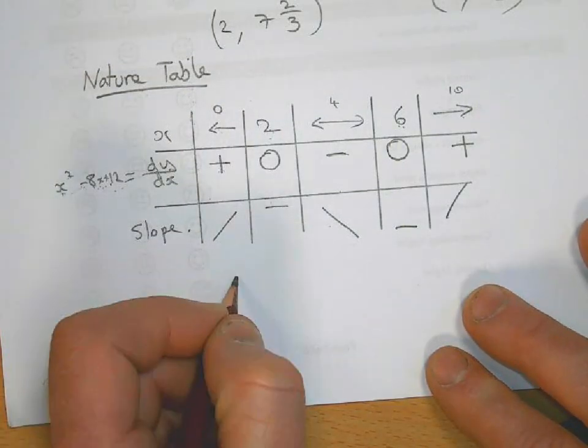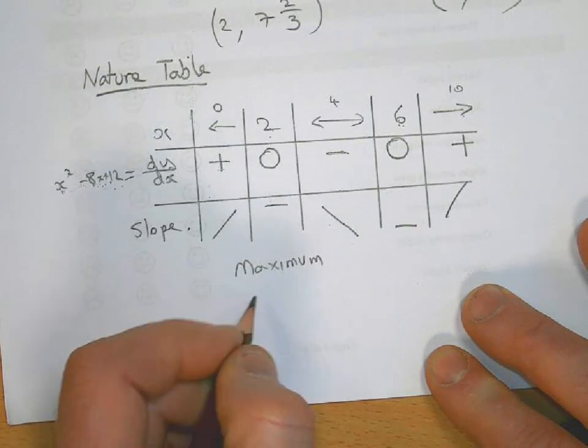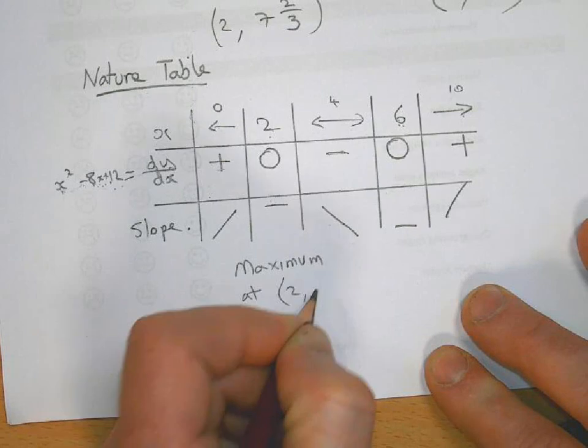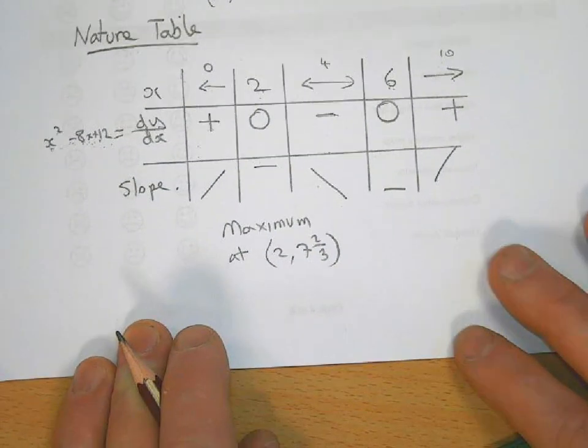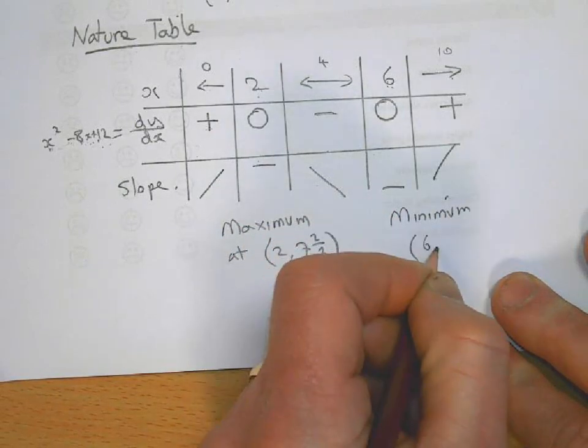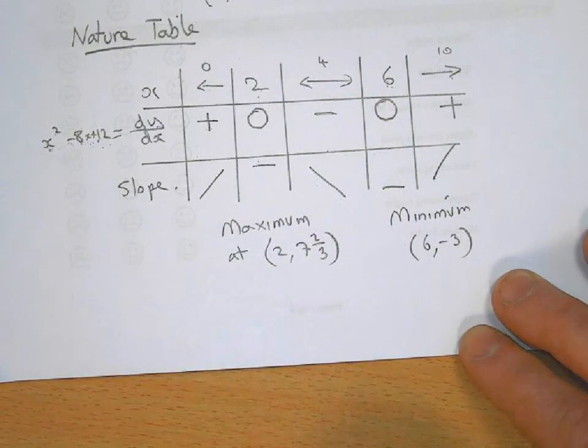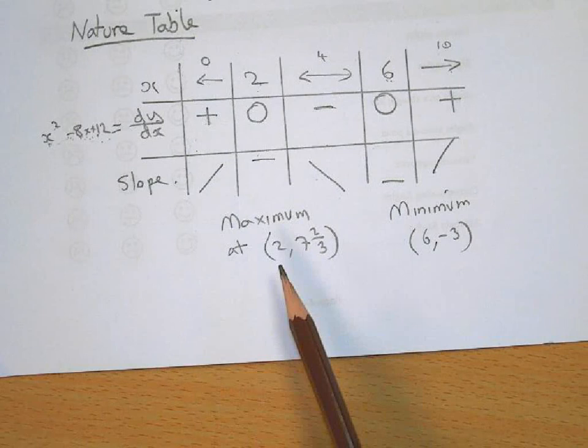So this is going to be a maximum. And again, you want to write down the maximum is at 2 and 7 and 2 thirds, and the minimum is at 6 minus 3. Now it's not asking you to plot it in this question, it's just asking to work out whether it's a maximum and also to work out when it's a minimum.